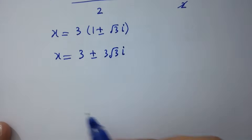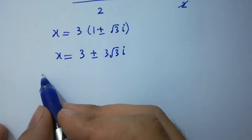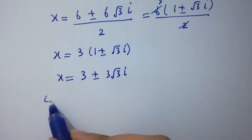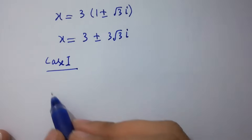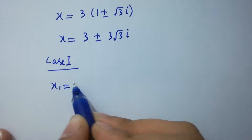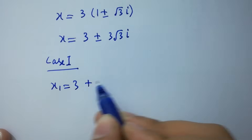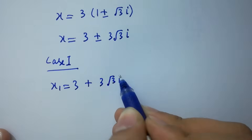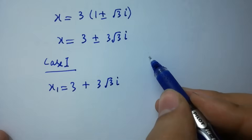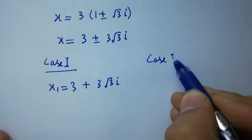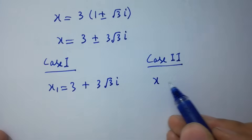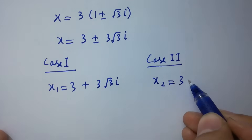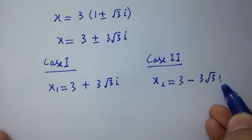So we have two cases. Case 1: x₁ equals 3 plus 3 root 3 i. Case 2: x₂ equals 3 minus 3 root 3 i.